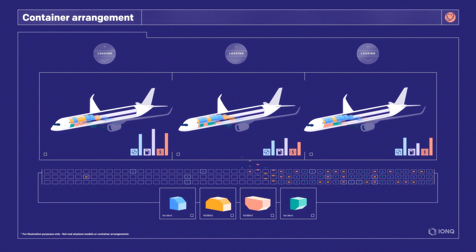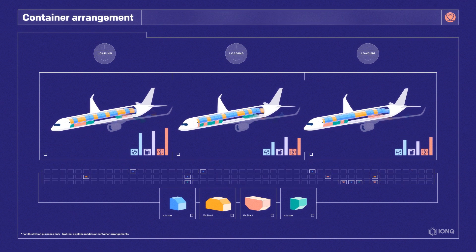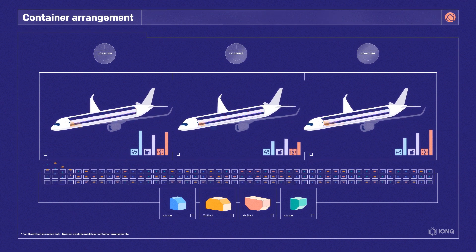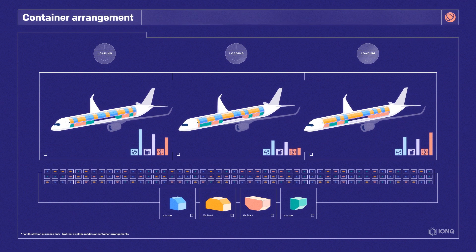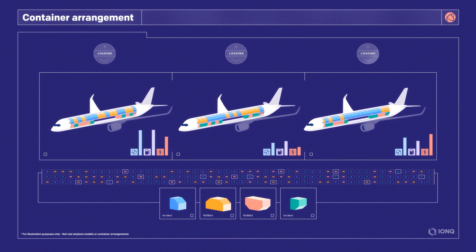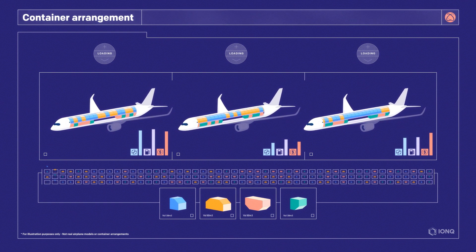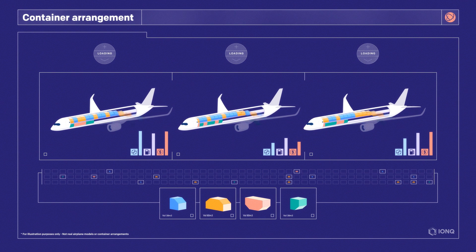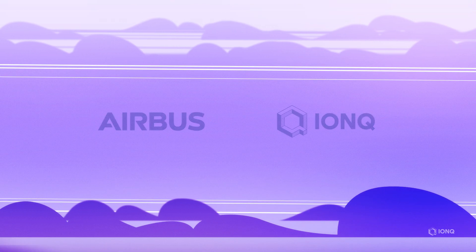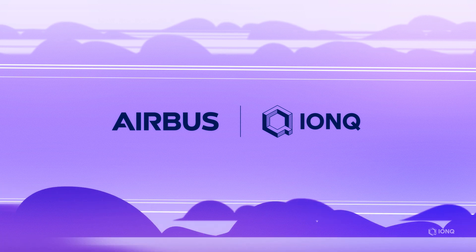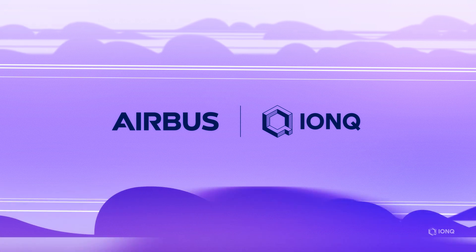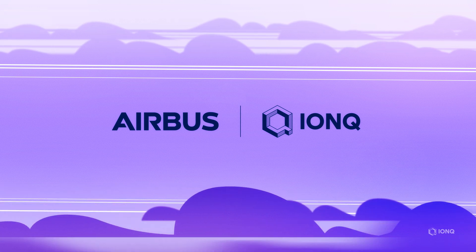Considering all possible combinations of containers and slots is far more challenging than expected. With each new container, plane and possible slot, the problem grows exponentially more complex. To help solve this significant challenge, Airbus partnered with IonQ to explore a quantum computing algorithm for cargo loading.